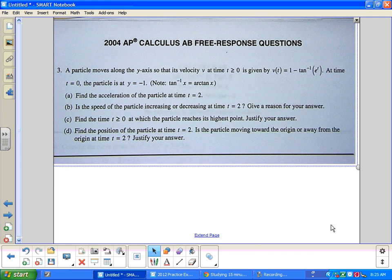Alright, 2004 free response problems, free calculator allowed. A particle moves along the y-axis of velocity v at time greater than or equal to zero is given by the following function: 1 minus tan to the negative 1 e of t. Tan to the negative 1 x equals arctan x.